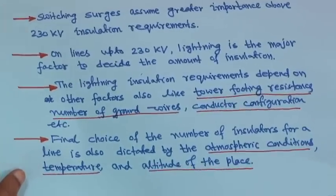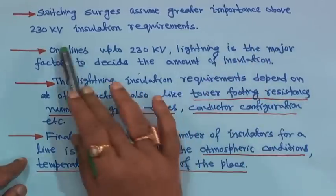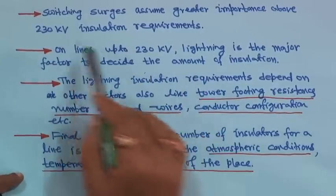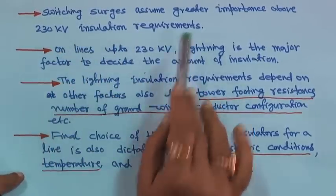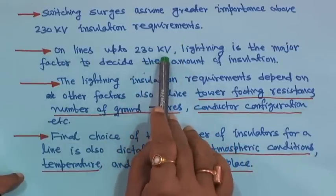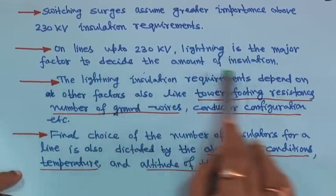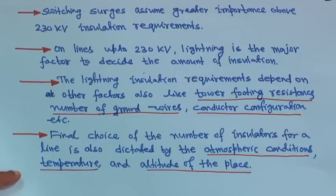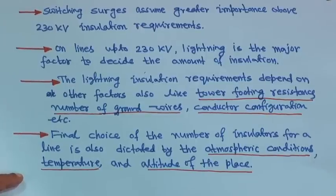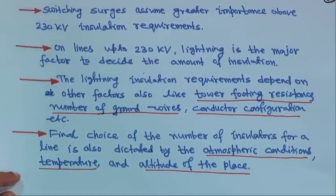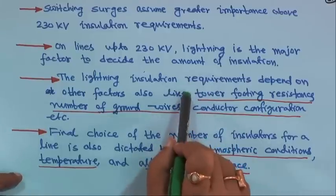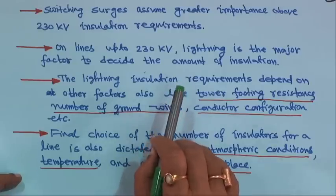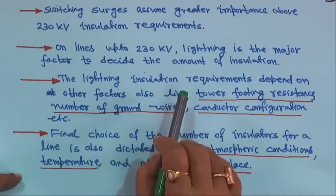Switching surges assume greater importance above 230 kV insulation requirements — in our country 220 kV or above, then 400 kV lines. On lines up to 230 kV, lightning is the major factor to decide the amount of insulation, because lightning strokes are very common phenomena everywhere. If a lightning stroke hits the top of a tower, you do not know how much it can affect your equipment or apparatus at the substations.